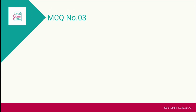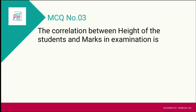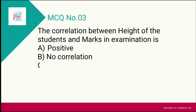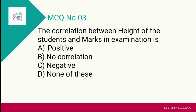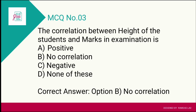Question number three: The correlation between height of the students and marks in examination is? If the height is very high, it does not affect marks in the examination — marks do not depend on the height of the student. The options are: A) positive correlation, B) no correlation, C) negative correlation, D) none of these. The correct answer is option B — no correlation.